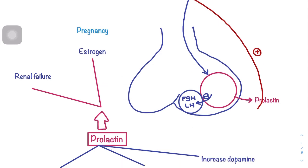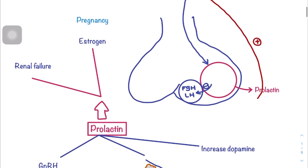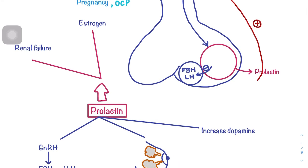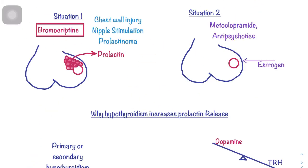Elevated prolactin in blood can occur in several situations. During pregnancy, high estrogen levels cause an increase in prolactin. The use of oral contraceptive pills can also raise prolactin. Another cause is impaired prolactin excretion during renal failure, where the body cannot remove excess prolactin, leading to high prolactin levels.